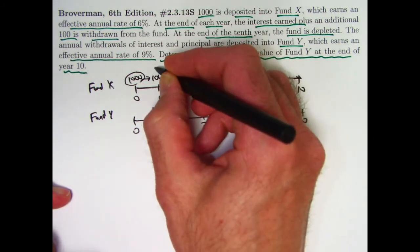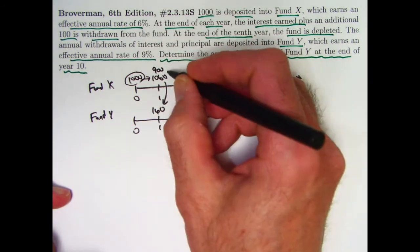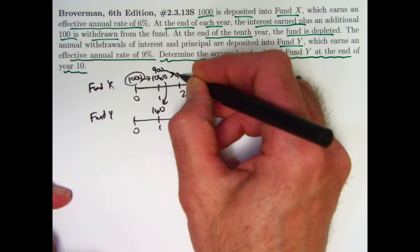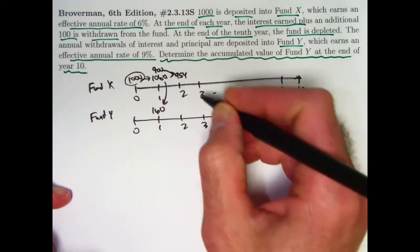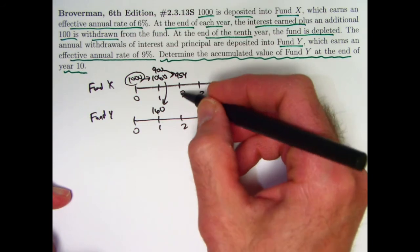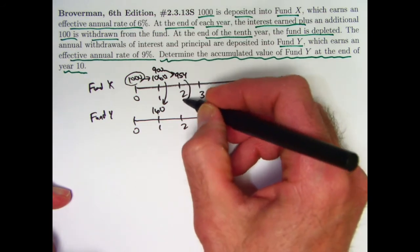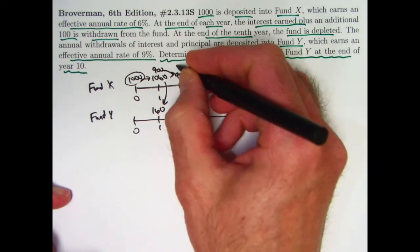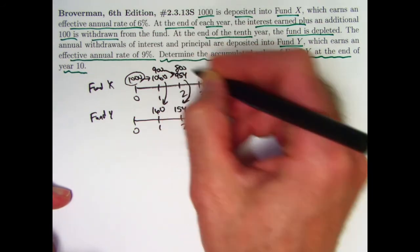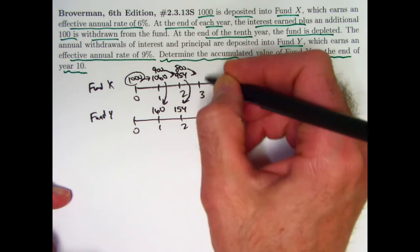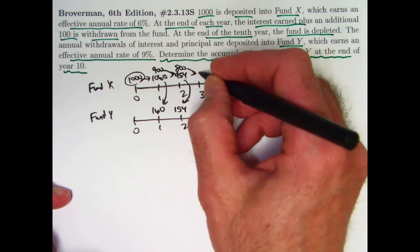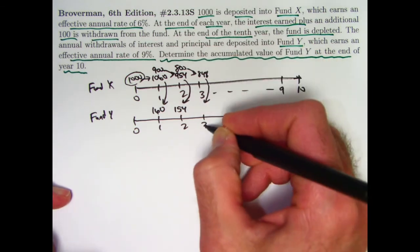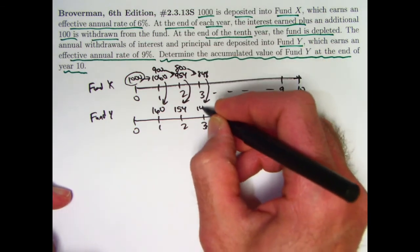The new balance in fund X is 900. During the second year from time one to time two it grows by another six percent, growing to 954. 54 is six percent of 900. Take that interest of 54 plus another 100 and deposit it into fund Y at time two: 154 into fund Y, and the new balance in fund X is 800. During the next year, six percent of 800 is 48, growing to 848. Then the interest of 48 plus another 100 goes into fund Y at time three: 148.